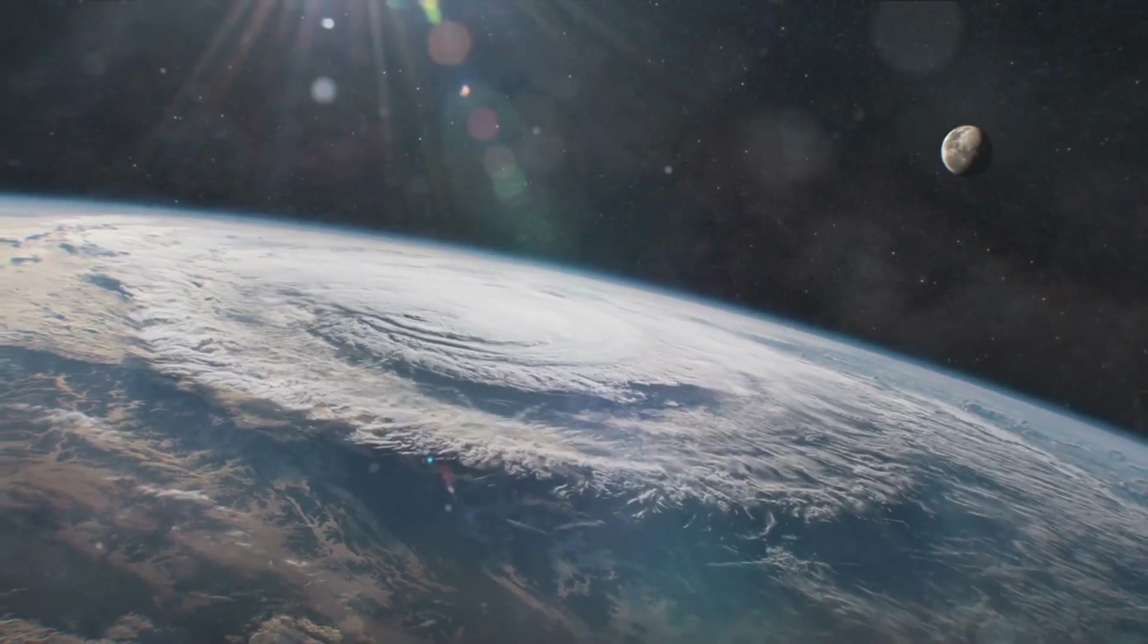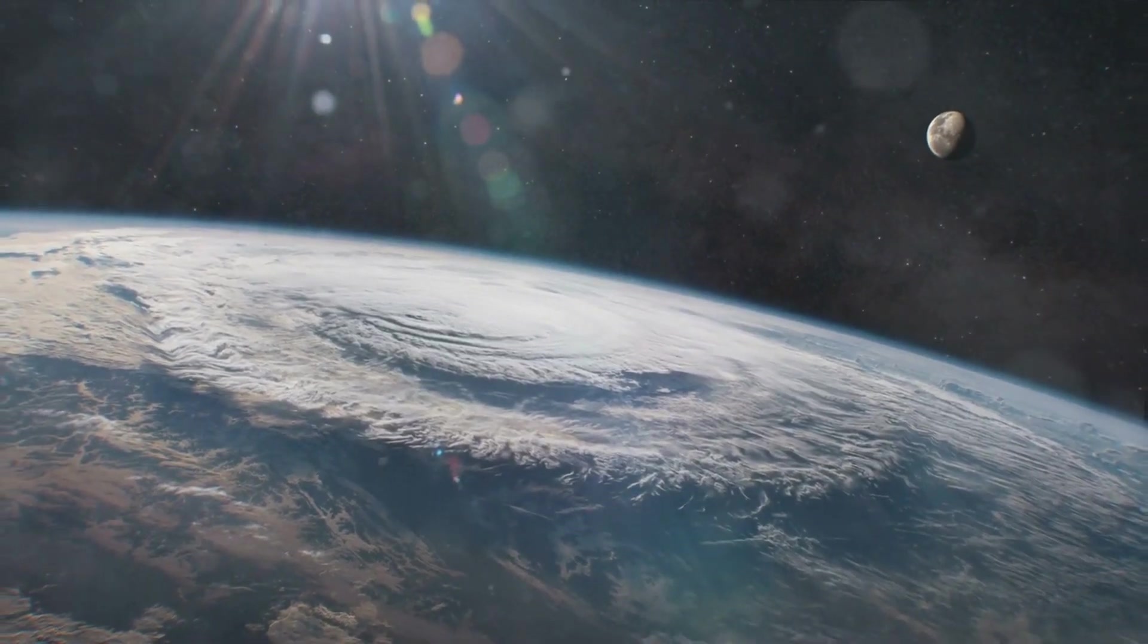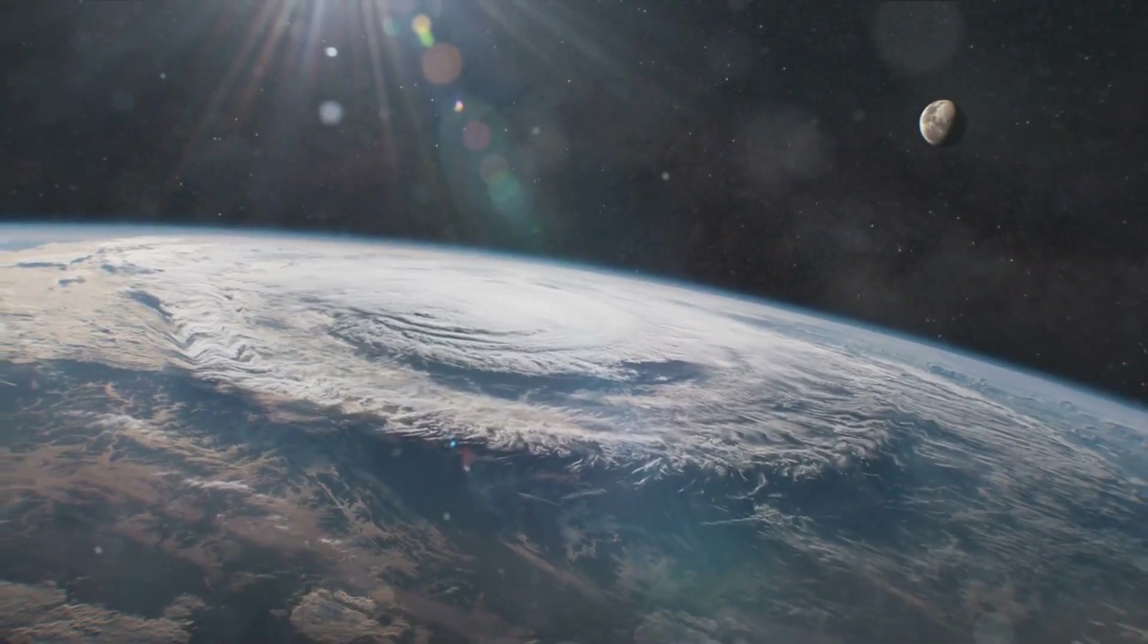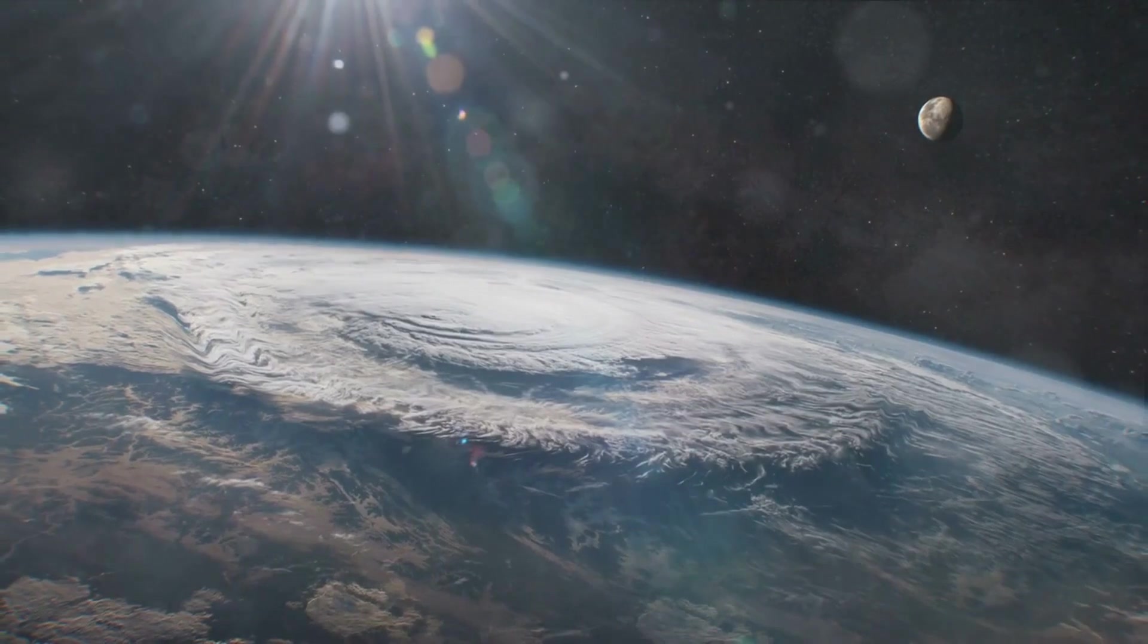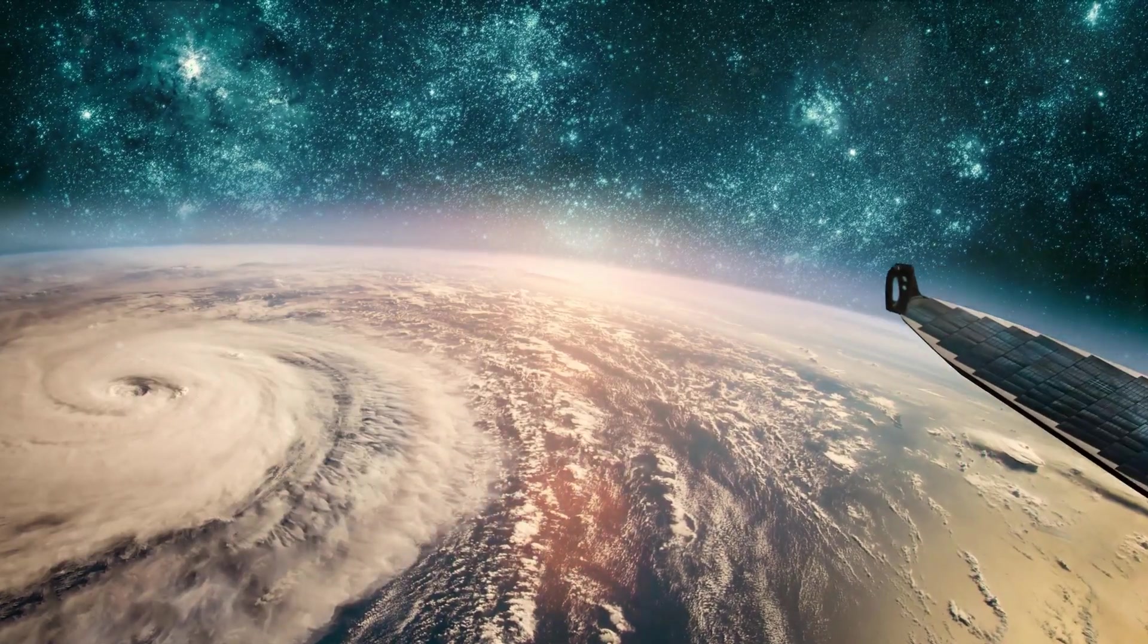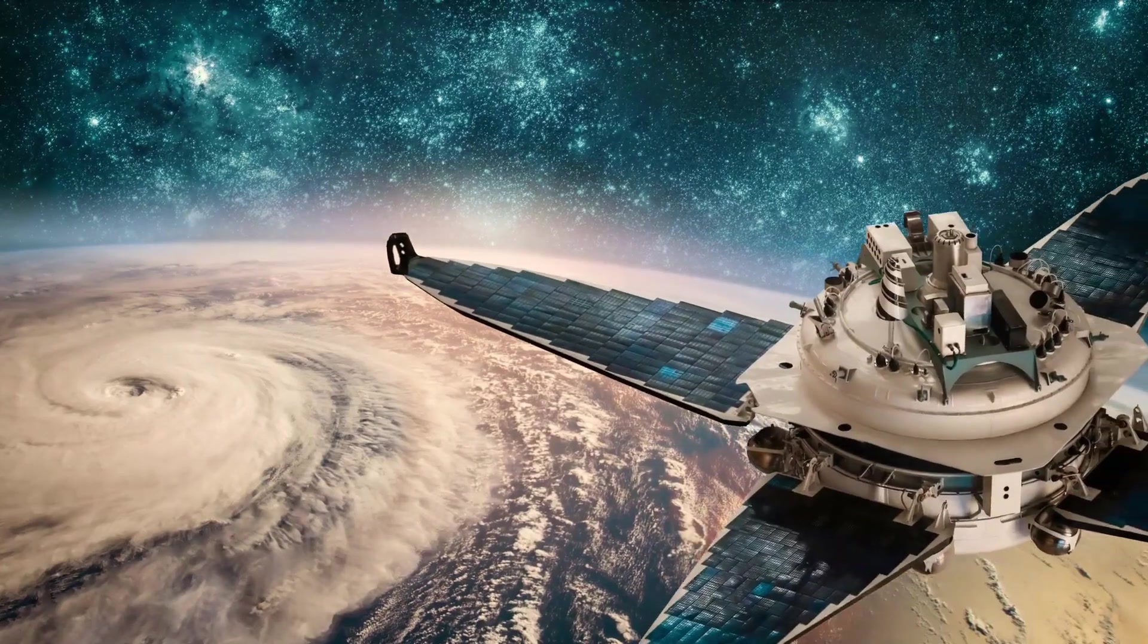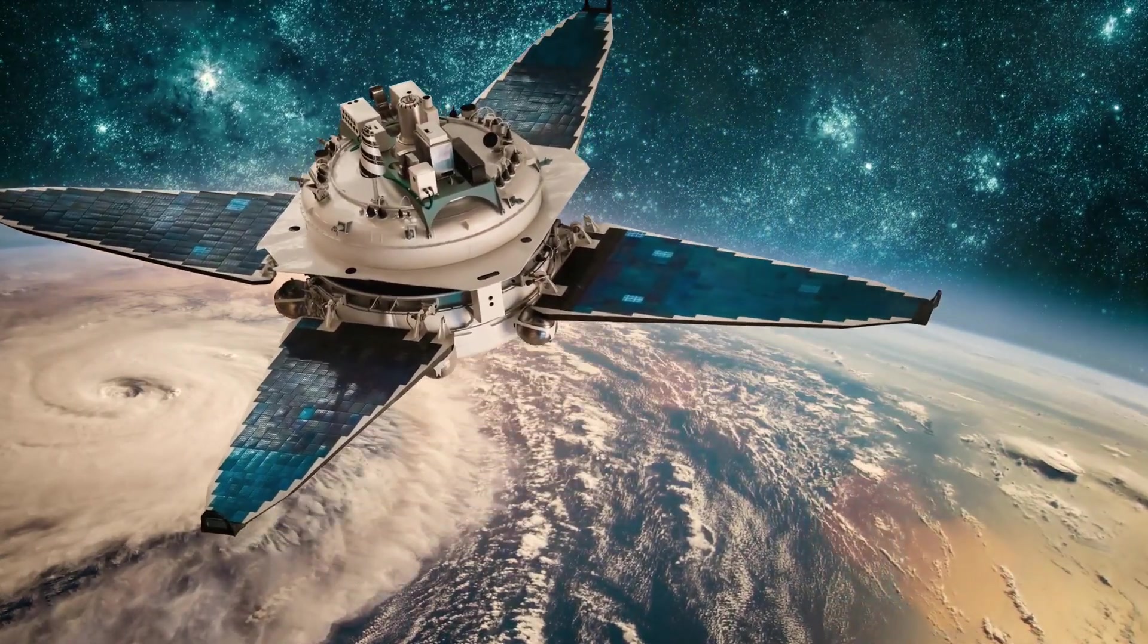These planets are gas giants, akin to our Jupiter and Saturn. Each of them has a rich atmosphere with complex weather patterns. Kepler 385e, for instance, is known for its spectacular storm systems, while Kepler 385f has a mesmerizing ring system that rivals Saturn's.